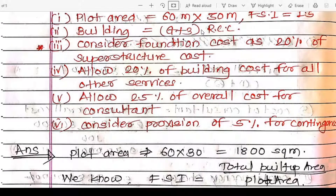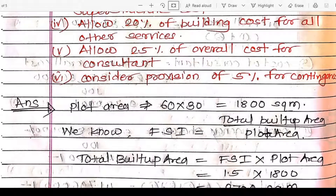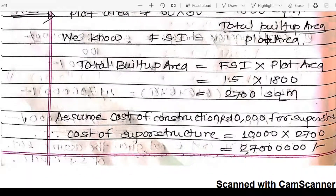The plot area is 60 × 30 = 1,800 square meters. FSI (floor space index) is defined as total built-up area divided by plot area. Therefore, total built-up area = FSI × plot area = 1.5 × 1,800 = 2,700 square meters. The building is located in the western suburb of Mumbai, so we assume a construction cost of rupees 10,000 per square meter for the superstructure.